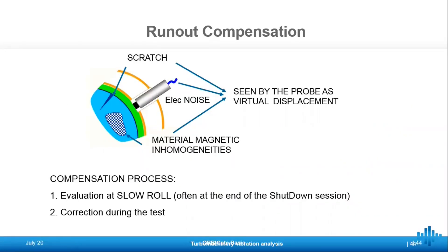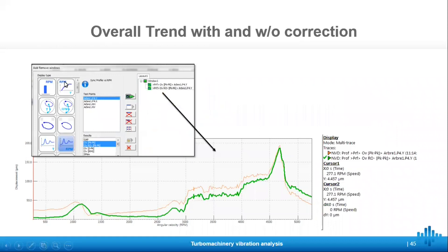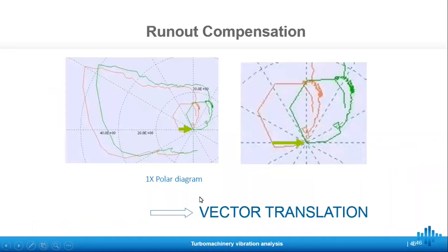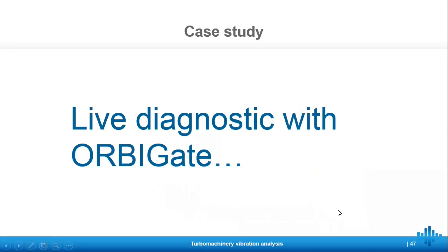The last key feature is run-out compensation. Sometimes the probe sees displacement that may actually be caused by things such as scratches, electrical noise, or magnetic inconsistencies rather than actual displacement. We would like to subtract that noise out of our data so that all we are left with is the real displacement. In the software, it's possible to set a low speed slow roll — that low speed data is used for vector subtraction in order to compensate the run-out and get rid of the noisy displacement. Now let's go over to Luke for a live demo of how this all works.